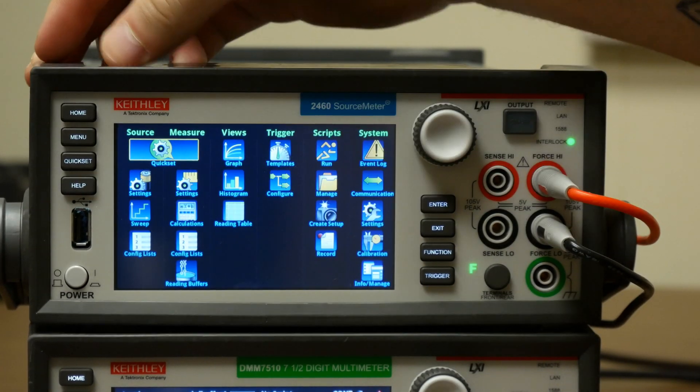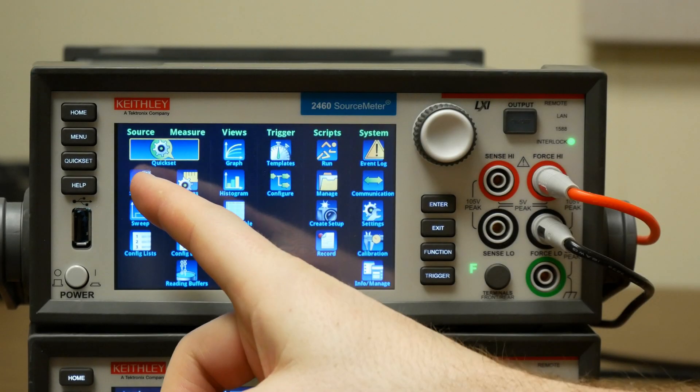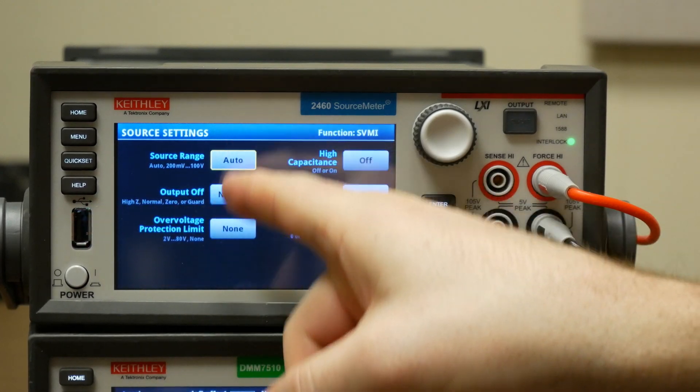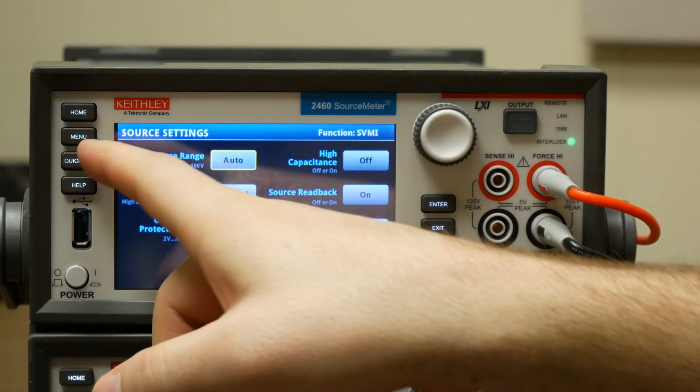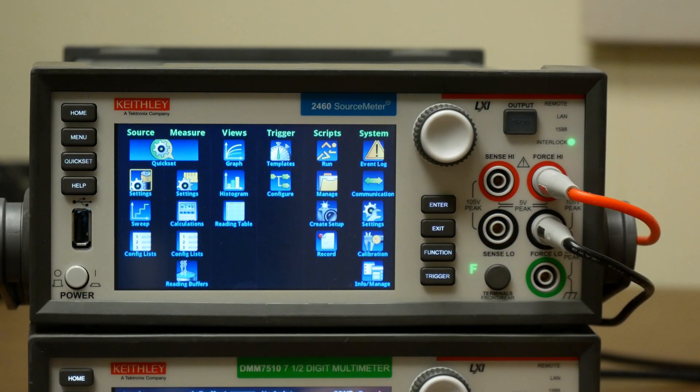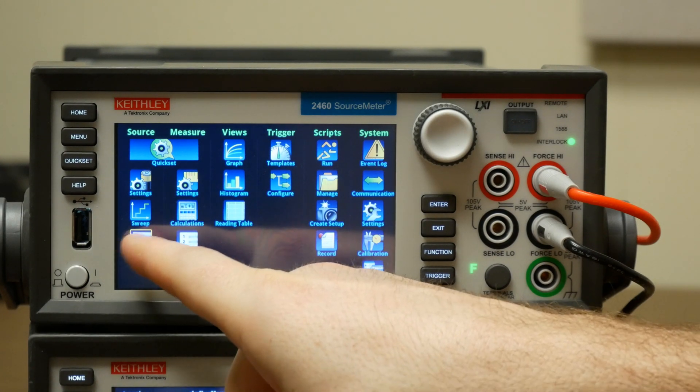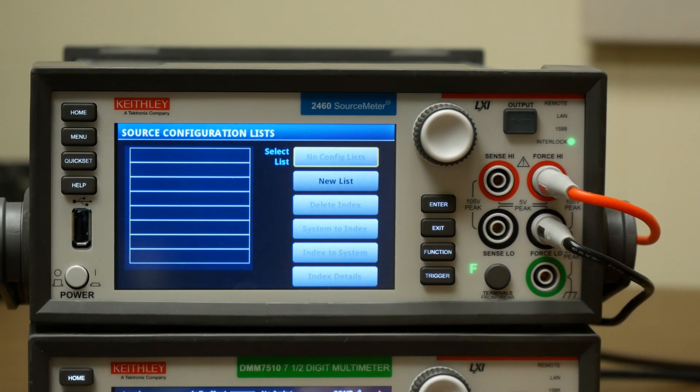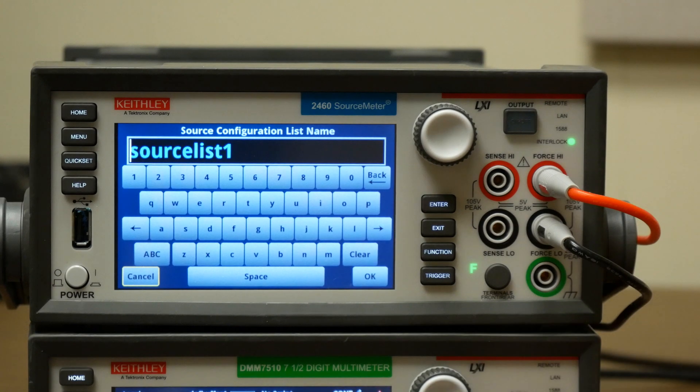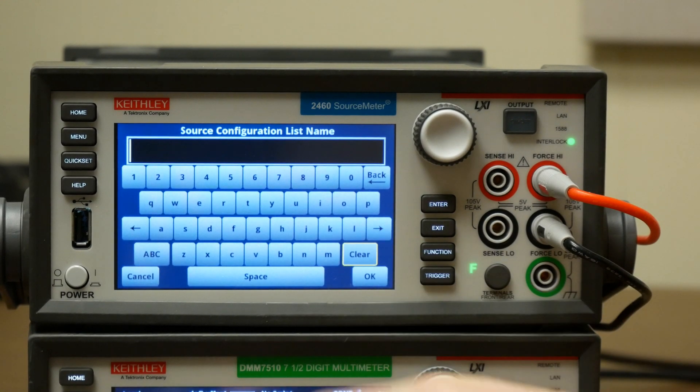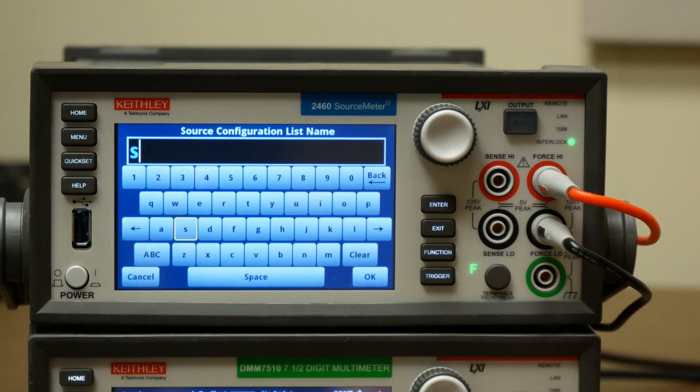Then you'll want to go to menu, and if you want you can go into the source settings menu and change any of these, but we're going to leave them as is for now. You're going to go to config lists under source and press new list. Here you can give it a name. We'll just call it A or S for now.